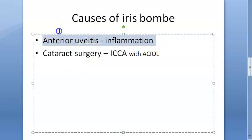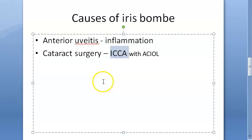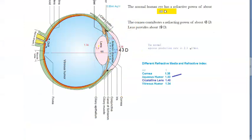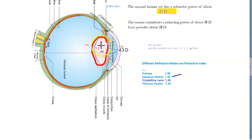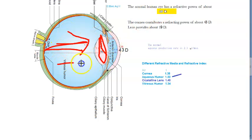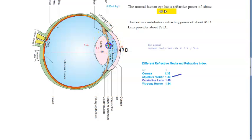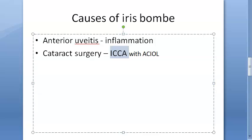Another cause of iris bombay is cataract surgery — specifically intracapsular cataract extraction (ICCE), in which the lens is removed along with the capsule. Because the capsule is removed, a posterior IOL cannot be placed, so an anterior chamber IOL is used. With the capsule and lens removed, the vitreous can bulge forward, leading to adhesion and pupillary block, similarly causing iris bombay formation.